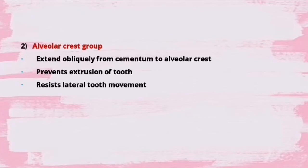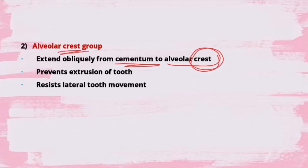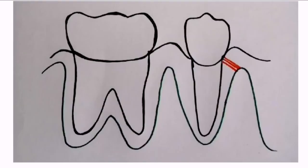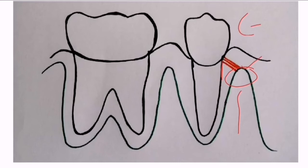The second group is the alveolar crest group. The name itself tells you it extends obliquely from cementum to the alveolar crest. It prevents extrusion of the tooth and resists lateral tooth movement. In the picture, you can see the fibers coming from the cementum and attaching to the crest of the alveolar bone. All periodontal ligament fibers run from cementum to alveolar bone.